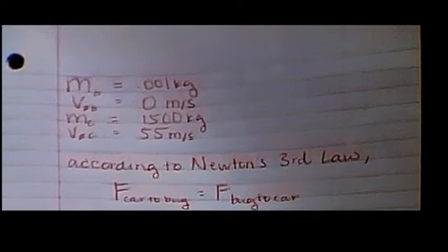Alright. Now Buggy's mass was 1,000th of a kilogram, and its initial velocity was 0 meters per second. The mass of the car was 1,500 kilograms, and its initial velocity was 55 meters per second.